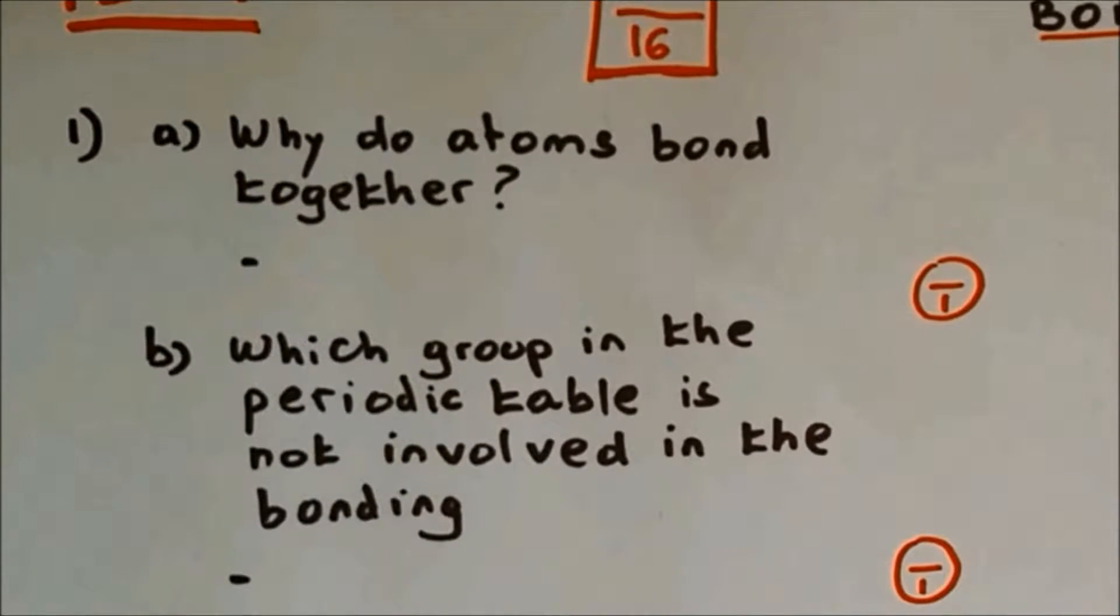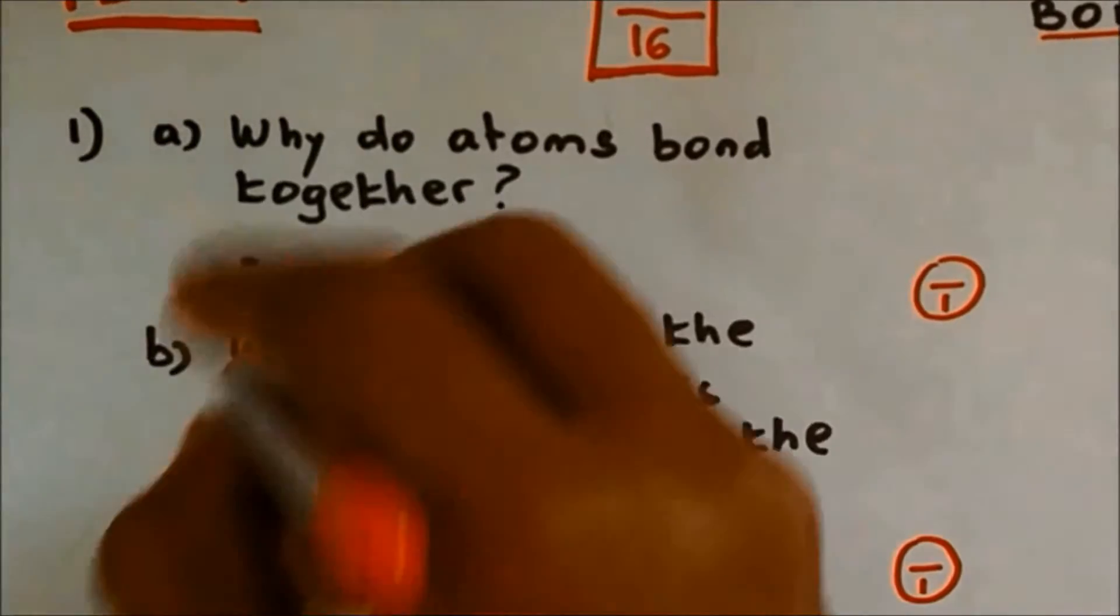Question 1a: Why do atoms bond together? Atoms bond together to have a full outer shell of electrons.